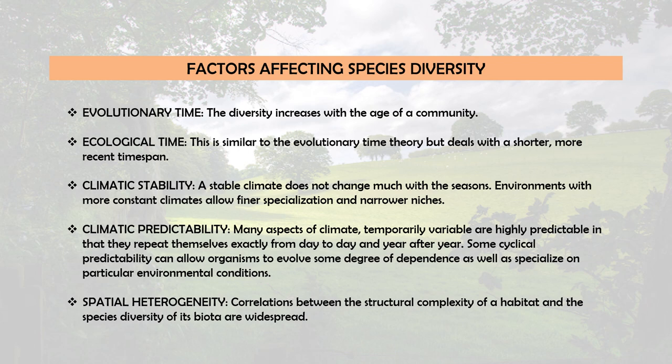The next factor is climatic stability. A stable climate is one that does not change much with the seasons. Environments with more constant climates allow finer speciation and narrower niches — for example, plants and animals in the relatively constant tropics are often highly specialized in both where they forage and what they eat. Related to this is climatic predictability: many aspects of climate, although temporarily variable, repeat themselves fairly exactly from day to day and year after year. Such cyclical predictability allows organisms to evolve dependence on particular environmental conditions and temporal patterns of resource availability, thereby enhancing seasonal replacement of species.